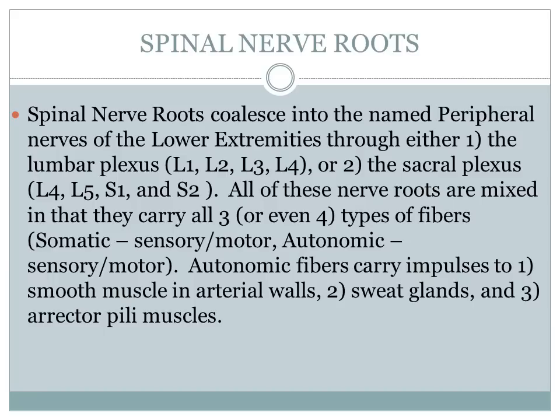There are somatic sensory and motor fibers, and there are autonomic sensory and motor fibers. The autonomic fibers carry impulses to smooth muscles in arterial walls, sweat glands, erector pili muscles, and also to cardiac muscle — though cardiac muscle is not of concern to us in this program about the lower extremities. When we think about the autonomic fibers innervating structures of the lower extremities, those autonomic fibers are innervating somatic structures.